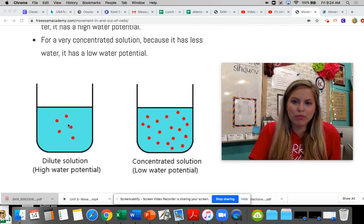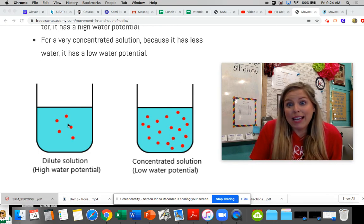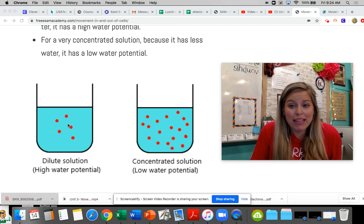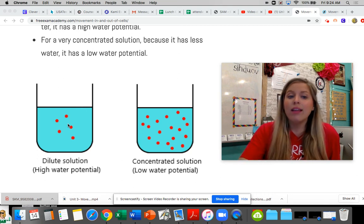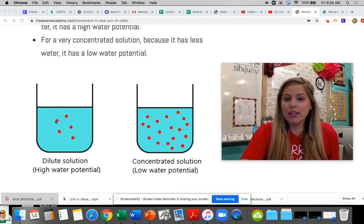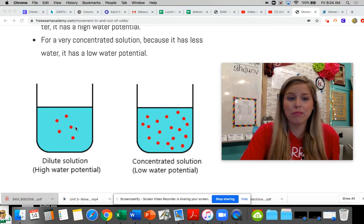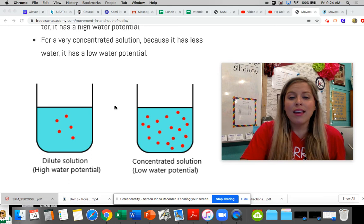You've all had a drink before that was supposed to be extra sweet and yummy, and maybe someone added too much water to it when they were making it, maybe a Kool-Aid or something, and it was diluted. So a dilute solution means high water potential. A lot more water than, let's say, the sugar molecules. We'll call the little red dot sugar molecules that are inside of it.